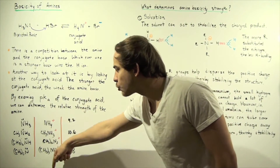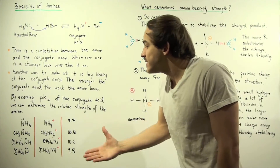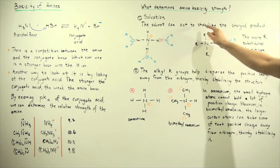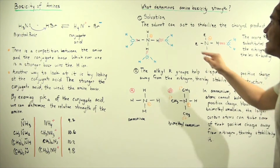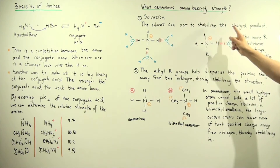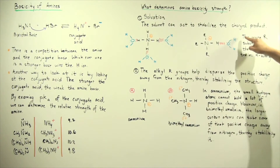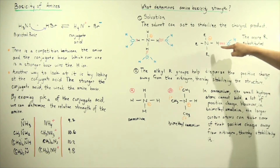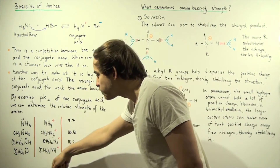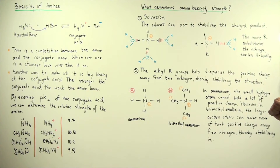As we go down the group on our conjugate acids, the solvent is less able to stabilize our product because we have fewer H atoms attached to the nitrogen. Solvation is the process by which the solvent stabilizes the charged product — our ammonium ion in this case. The more R groups we have on the nitrogen, the less hydrogen bonding we have, so our product is less stabilized by our solvent as we go down the group.